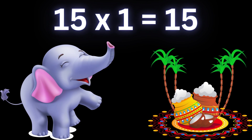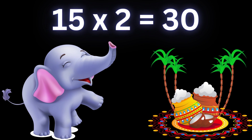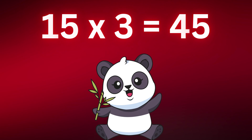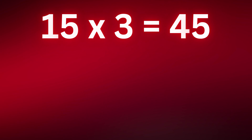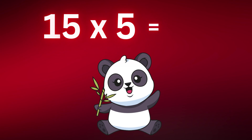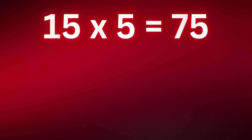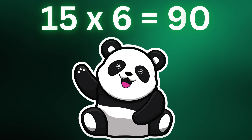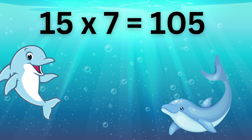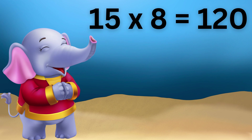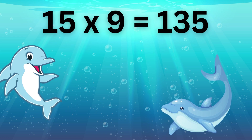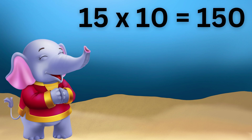Table of fifteen: fifteen ones are fifteen, fifteen twos are thirty, fifteen threes are forty-five, fifteen fours are sixty, fifteen fives are seventy-five, fifteen sixes are ninety, fifteen sevens are one hundred five, fifteen eights are one hundred twenty, fifteen nines are one hundred thirty-five, fifteen tens are one hundred fifty.